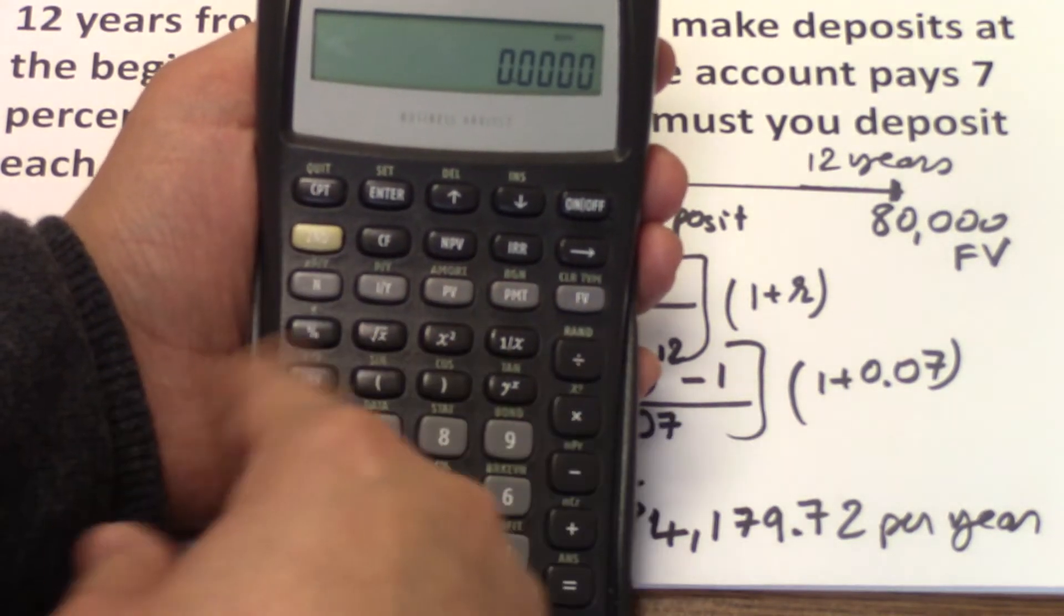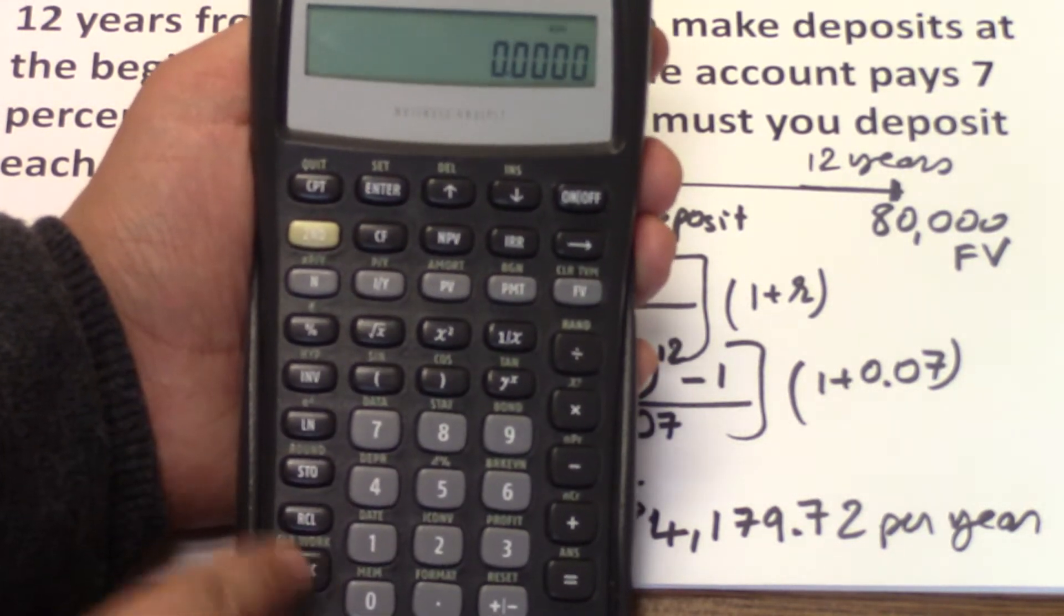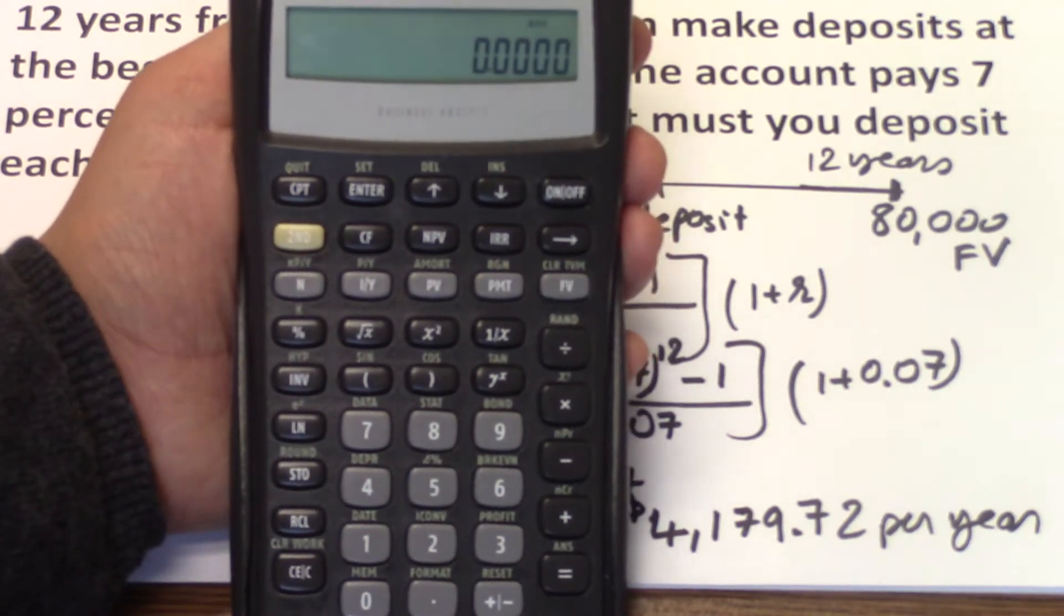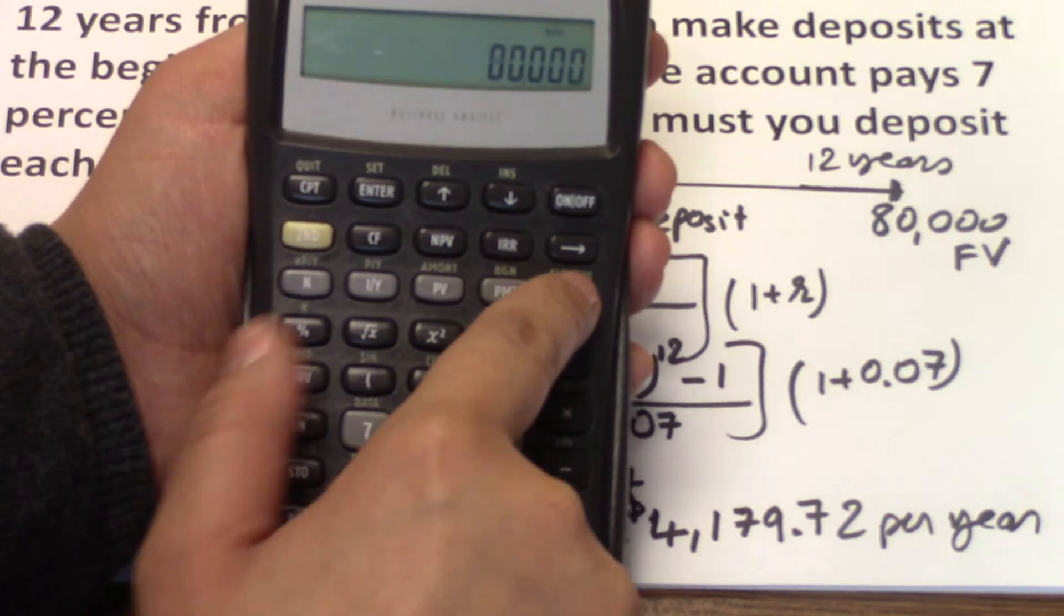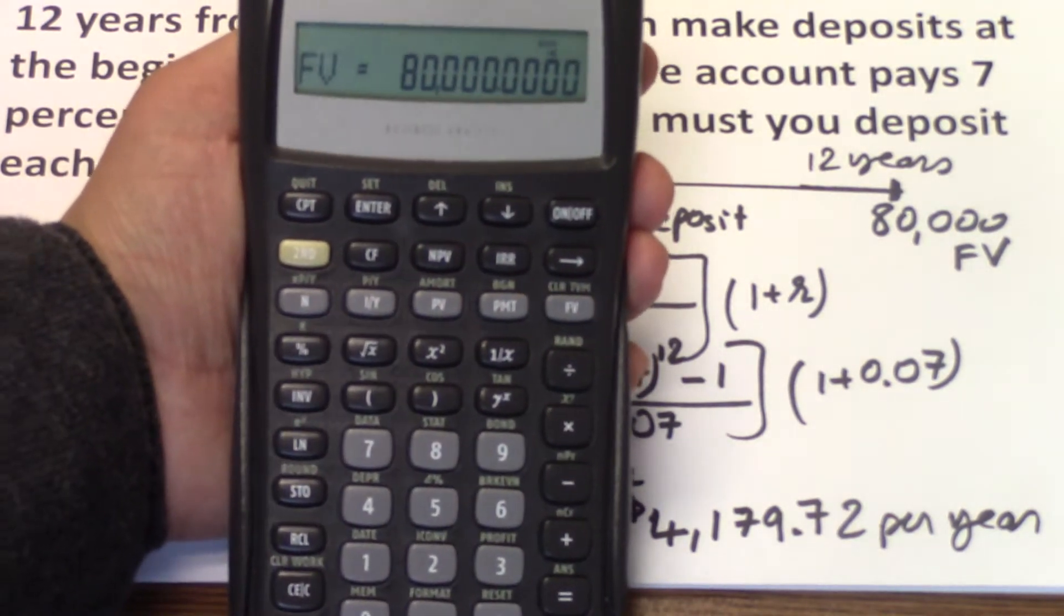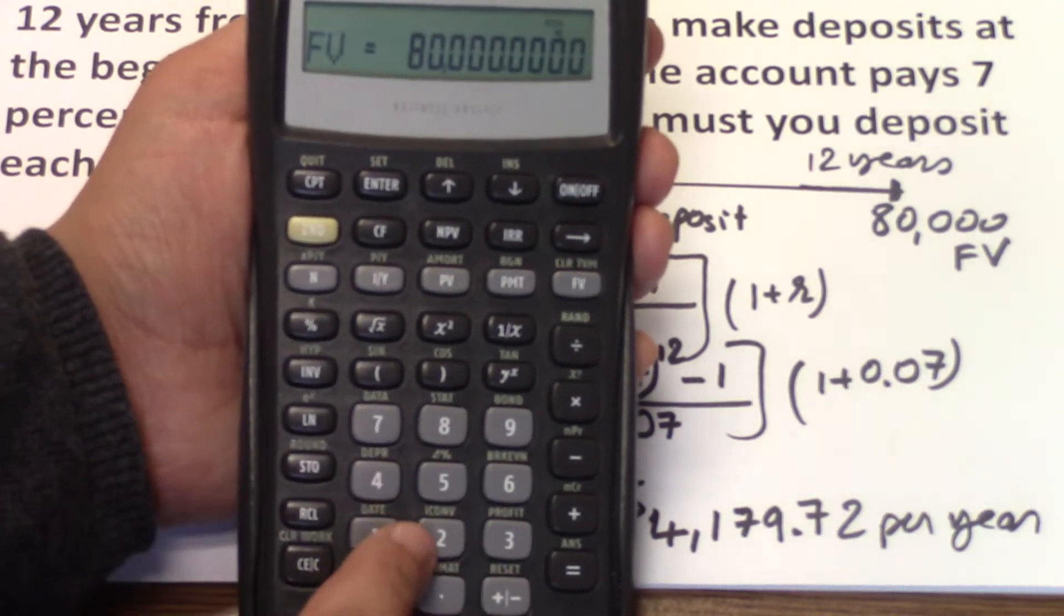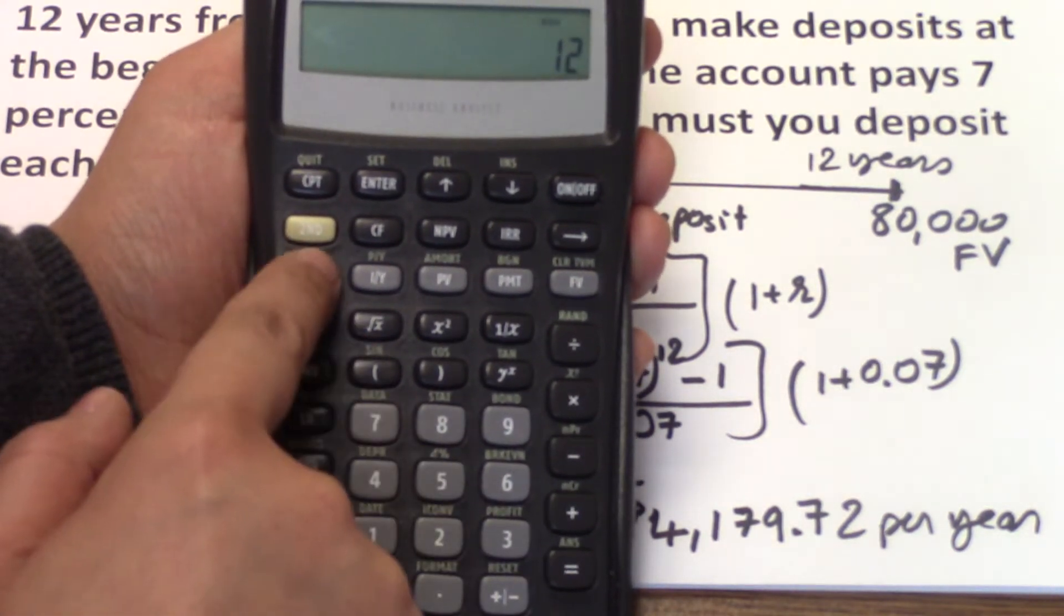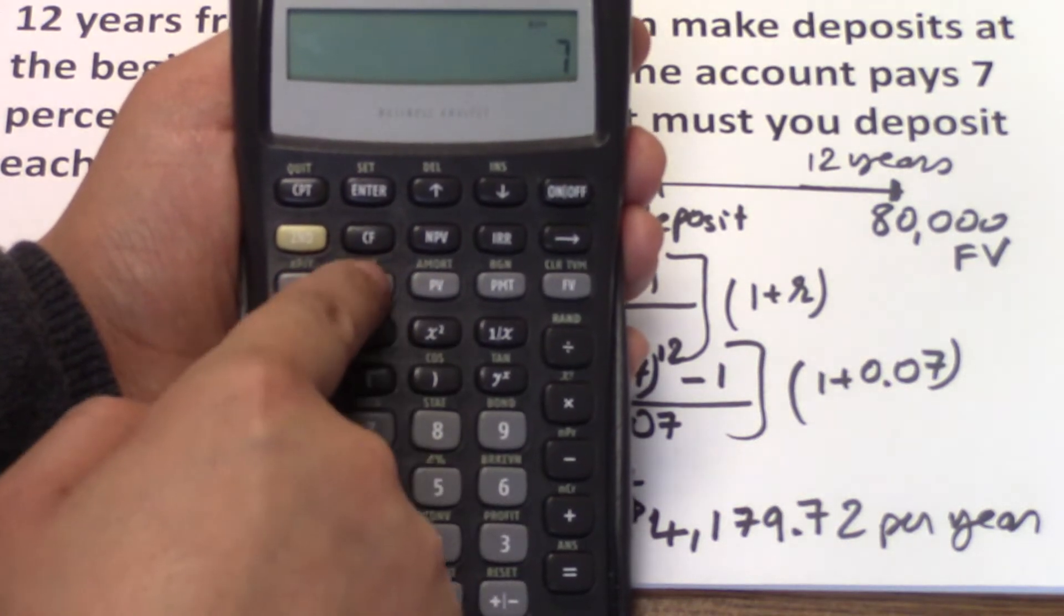First, before you enter your time value of money calculations, you clear your time value of money calculations. So we do know that 80,000 is the future value. We input it as a positive number because we're expecting to get that as a cash inflow at the end of 12 years. We're investing for 12 years, so 12 is N. The I over Y is 7.